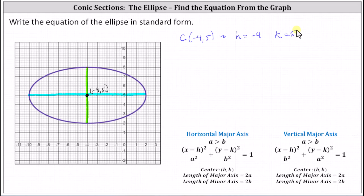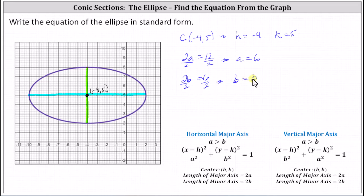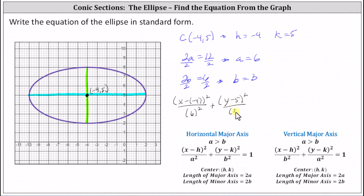The length of the major axis is the distance from x equals negative ten to x equals two, which is 12, indicating two a equals 12. Dividing both sides by two, we have a equals six. The length of the minor axis is six units, which indicates two b equals six. Dividing both sides by two, we have b equals three. Using the equation for a horizontal major axis, the square of x minus h is the square of x minus negative four, divided by a squared, which is the square of six. Notice that because we have a horizontal major axis, the larger denominator is under the x part. Now we have plus the square of y minus k, which is the square of y minus five, divided by b squared, which is the square of three, equals one.